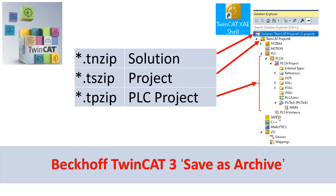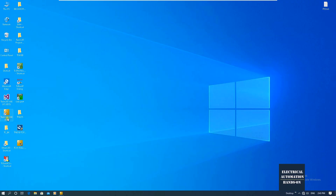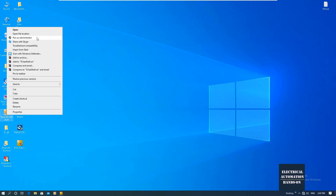In addition, the safety project and C++ project can also be saved as archive files — they each have their own individual extension names. Let's open TwinCAT 3 and demonstrate how to export a project using 'Save as Archive' and how to import a zip file. Let's run TwinCAT XAE as administrator.